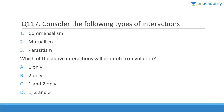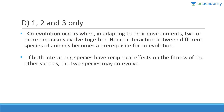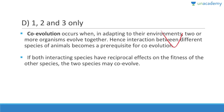Commensalism, mutualism, and parasitism — which will promote co-evolution? All three will promote co-evolution. In commensalism one gets benefited; in parasitism one gets benefited and the other harmed; in mutualism both evolve equally. Co-evolution occurs when two or more species reciprocally affect each other's evolution. If both interacting species have reciprocal effects on each other's fitness, the two species may co-evolve.